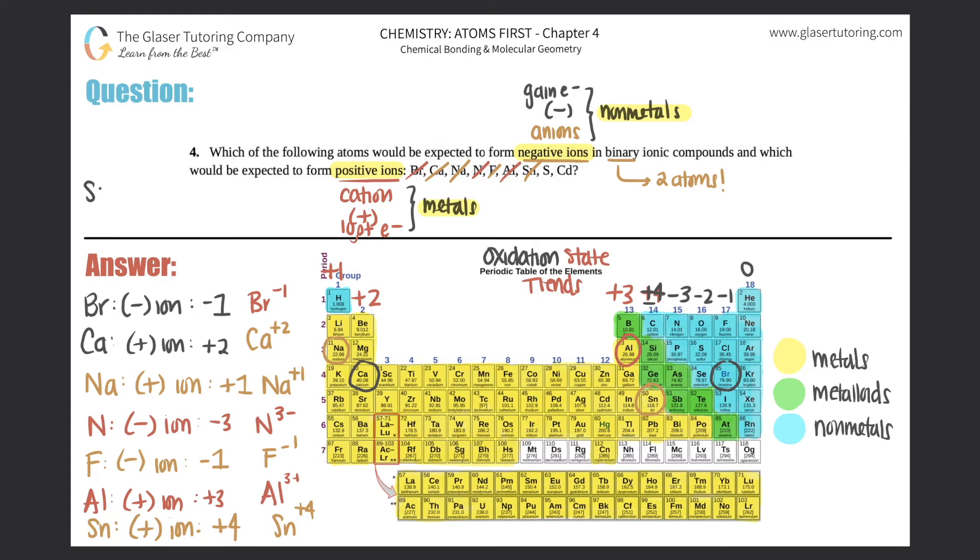Sulfur is number 16, it's in the oxygen group, the chalcogen group, it's a negative two. That means it's a negative ion, an anion, a non-metal, more specifically negative two. You would just write it like that if you wanted practice.